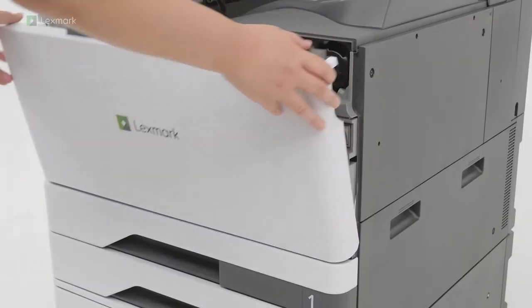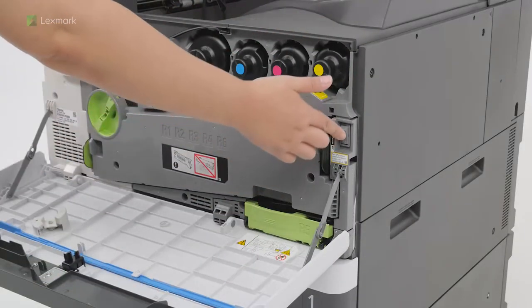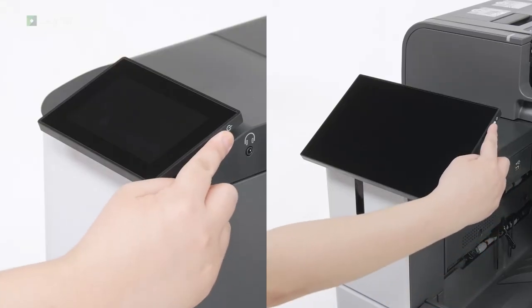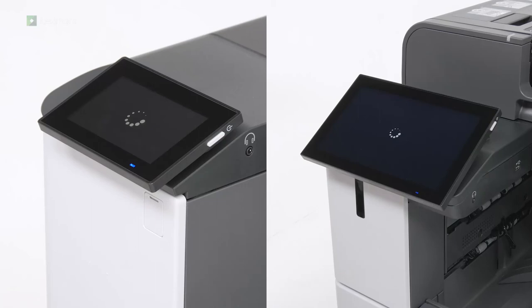Open the front door and then turn on the power switch. If the display is blank, then press the power button on the control panel.